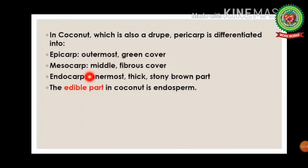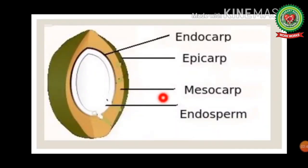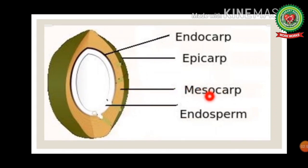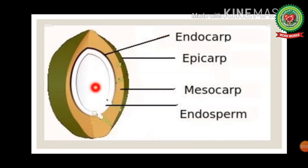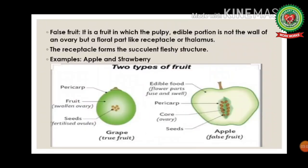In coconut, which is also a drupe, the pericarp is differentiated into epicarp, mesocarp, and endocarp. The epicarp is the outer green cover. The mesocarp is the fibrous middle cover. The endocarp is the thick stony brown innermost layer. The edible portion of coconut that we consume is the endosperm.